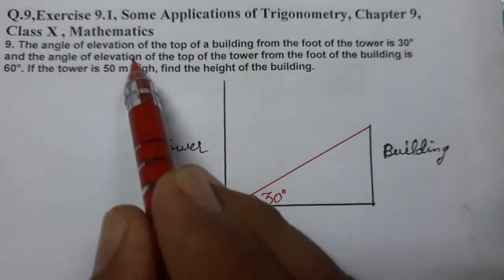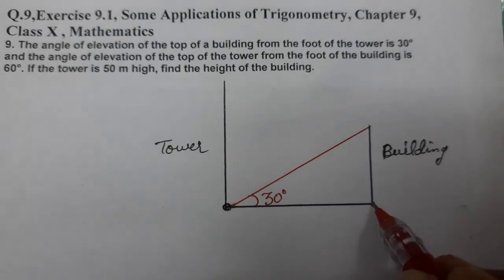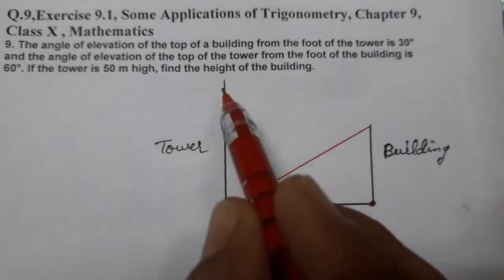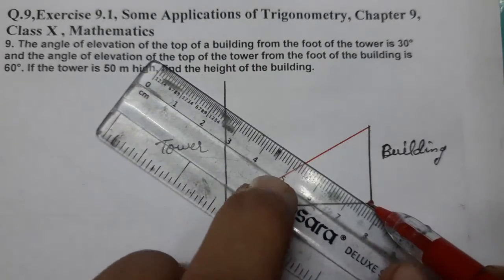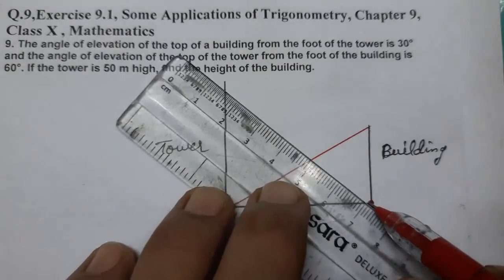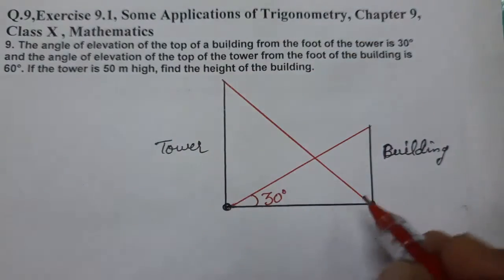And the angle of elevation of the top of the tower from the foot of the building - building ke foot se tower ke top pe ja raha hai. Building ke foot ho gaya, and building ke foot se tower ke top pe ja raha hai. Angle of elevation itna ban raha hai - 60 degree ban raha.